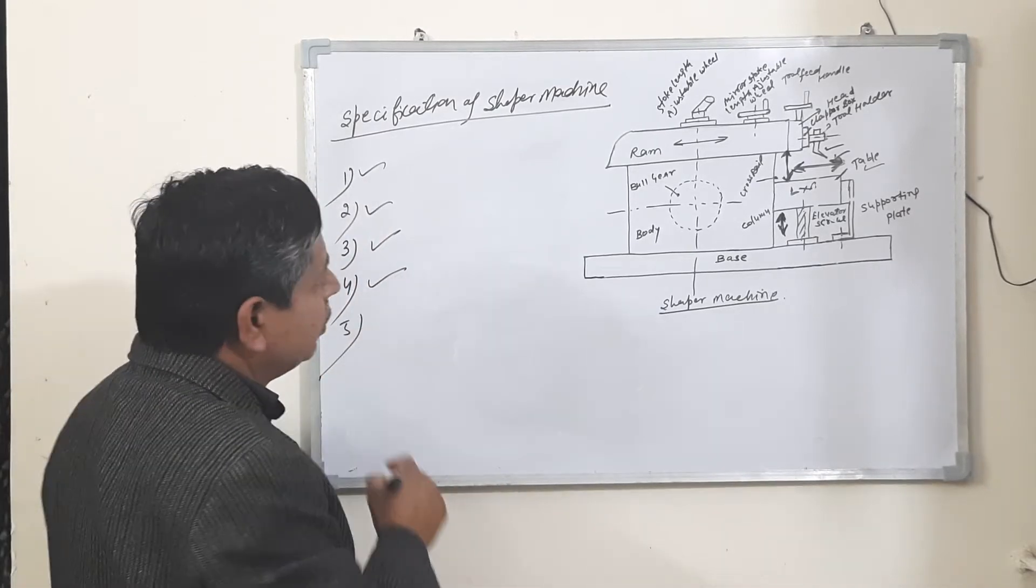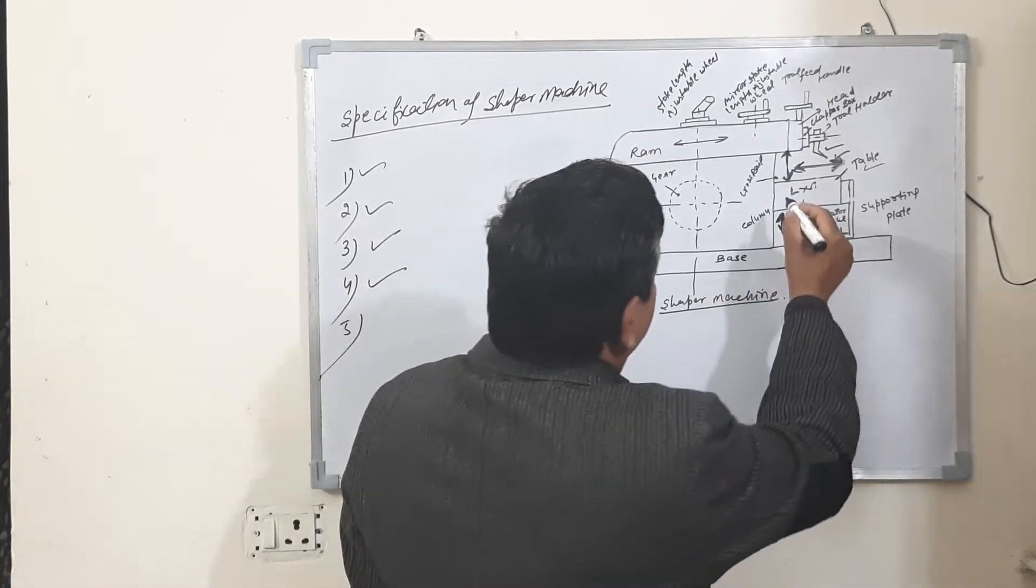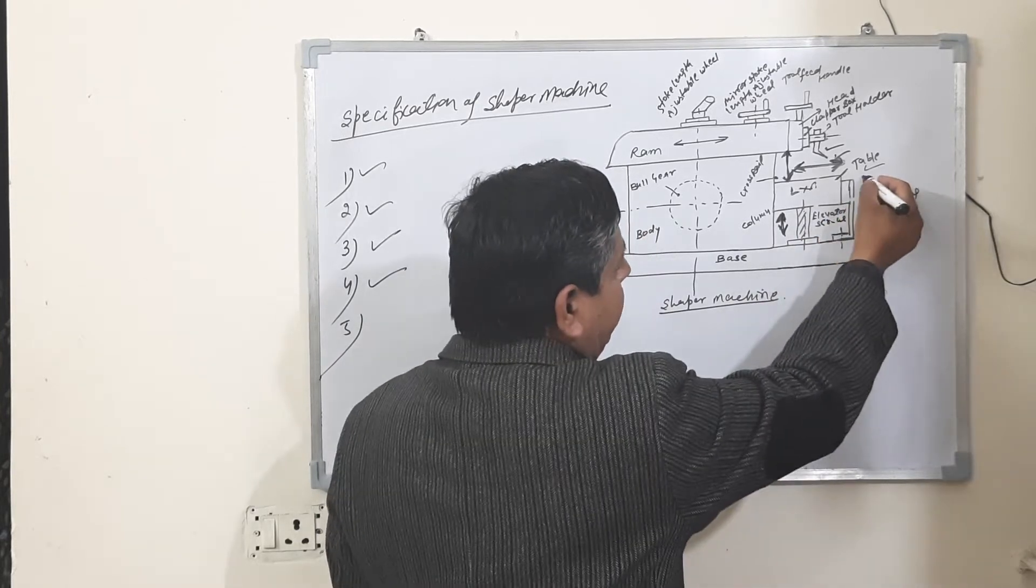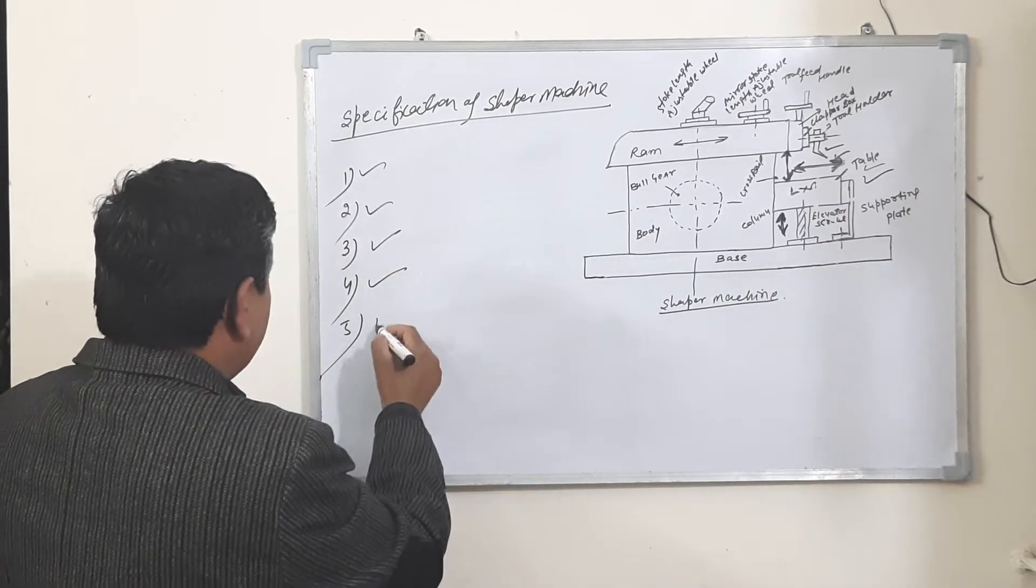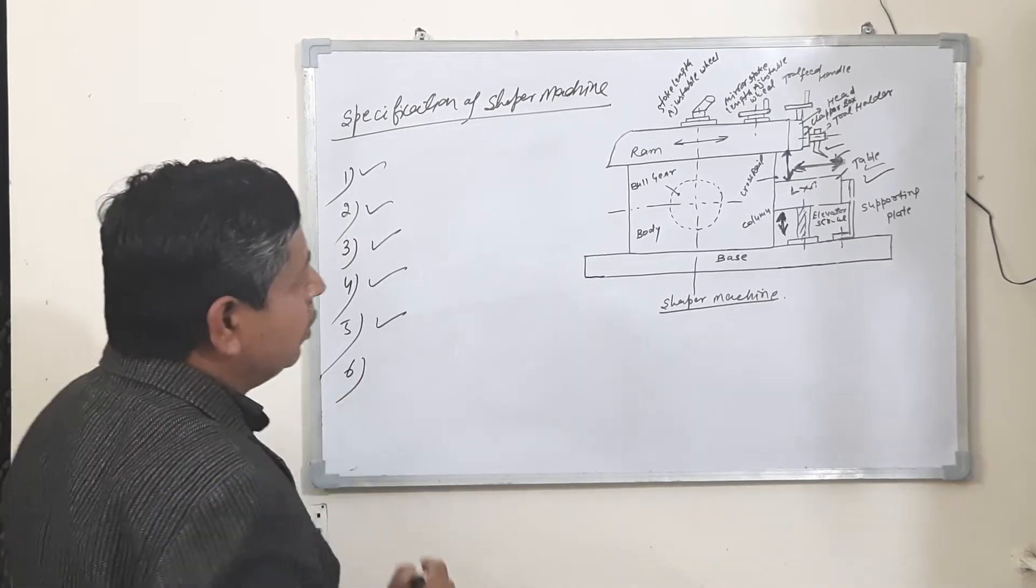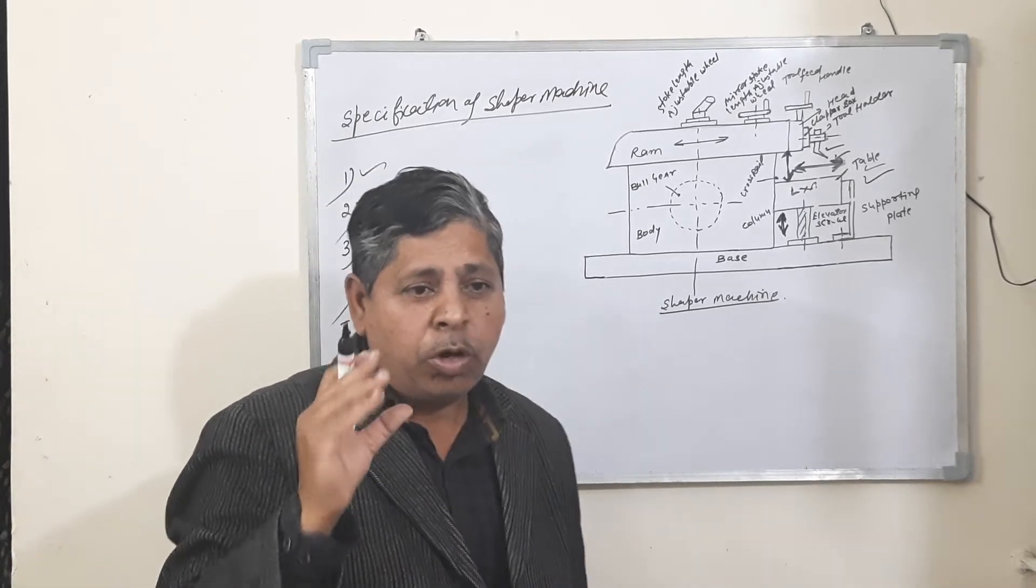Number five: size of the table machine. Number six: horsepower required.